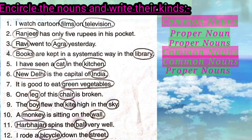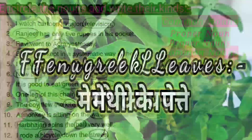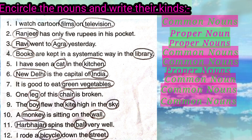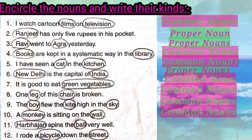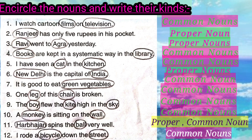It is good to eat green vegetables. You know there are different kinds of green vegetables like spinach, fenugreek leaves — here it is not specific, so it is a common noun. 'One leg of this chair is broken.' Leg and chair are both common nouns. 'The boy flew the kite high in the sky.' Boy, kite and sky are common nouns. 'A monkey is sitting on the wall.' Monkey and wall are common nouns. 'Harbhajan spins the ball very well.' Harbhajan is a proper noun whereas ball is a common noun. 'I rode a bicycle down the street.' Bicycle and street are both common nouns.